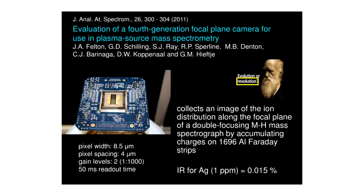It is a series of Faraday detectors in the form of a fine strip of metal — in this case aluminum, in other cases gold. The pixel width of the Faraday detector is only 8.5 micrometers, and they're separated by 4 micrometers. This device is capable of multi-isotope detection when placed in the focal plane.